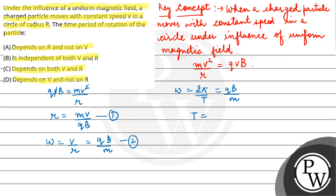Time period T = 2πM/(QB). From here we can see that T is independent of R and V. That means our final answer is the time period of rotation of particle is independent of both V and R.